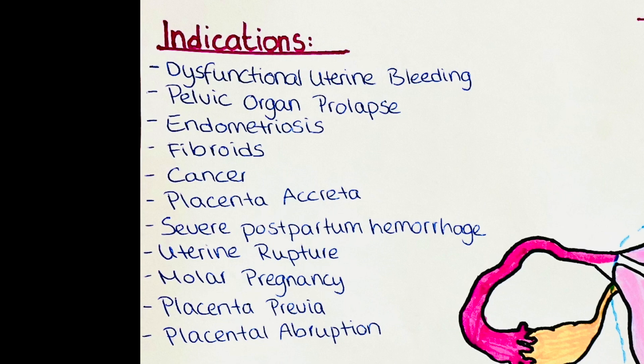Fibroids are non-cancerous tumors that grow in the uterus. They can cause pain, heavy menstrual bleeding, and pressure on other organs in the pelvis. Cancer: a hysterectomy may be recommended to treat certain types of cancer such as uterine cancer, cervical cancer, and ovarian cancer.